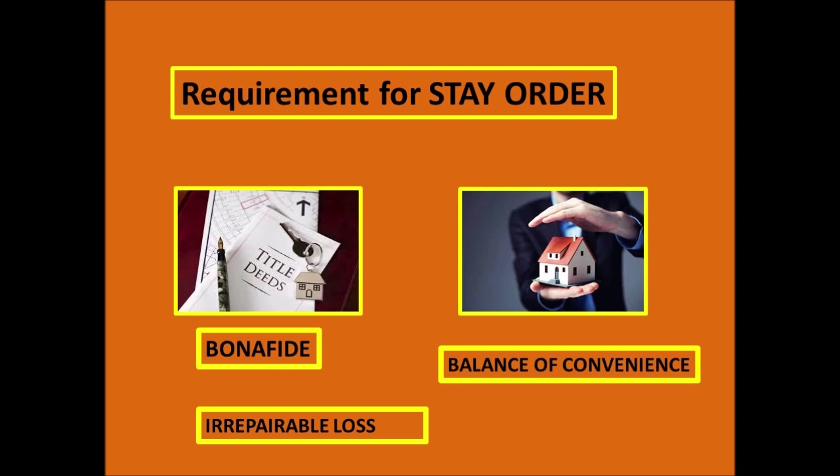So, to summarize what you need to do when you go to court: for the prima facie case, you have to show that you are the owner and that you have the relevant property documents. For the balance of convenience, you need to show the court that if construction or work continues on the property, you stand to lose significantly.